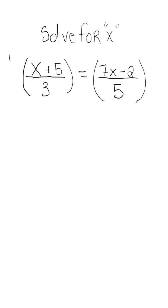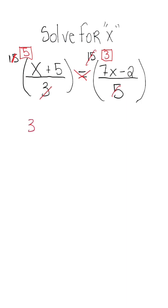We need a least common denominator, which is 15. But if you realize, once you divide 15 in the denominator, we're going to get 5 on the left side, and then on the opposite side we're going to get 3. If we just cross-multiplied instead, we will get the same exact thing. So we could take 3 times (7x minus 2) is equal to 5 times (x plus 5).